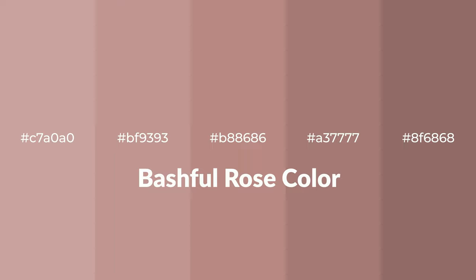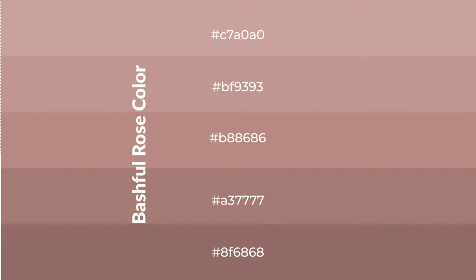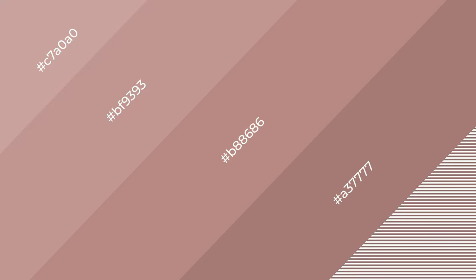Warm shades of bashful rose color with brown hue for your next project. To generate tints of a color, we add white to the color. Tints create light and exquisite emotions. To generate shades of a color, we add black to the color, and it is used in patterns, 3D effects, and layers. Shades create depth and drama.